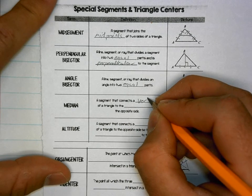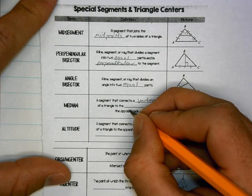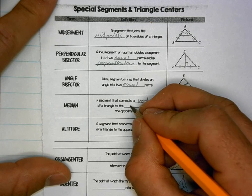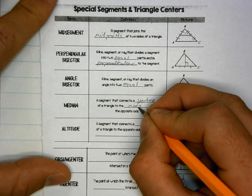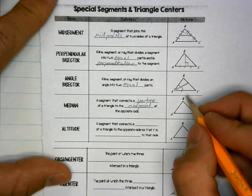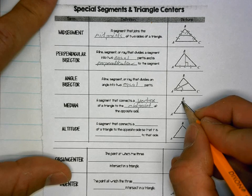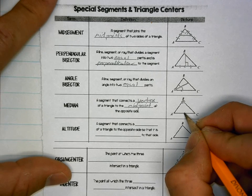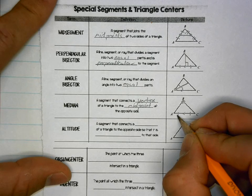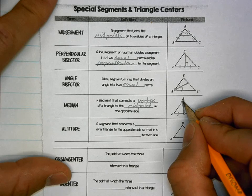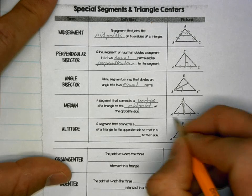Median: a segment that connects a vertex of a triangle to the midpoint of the opposite side. Starting with vertex B, I'm going to draw a line to the midpoint of AC — let's say the midpoint is there, two equal parts, two equal parts. So that is a median: vertex to the middle of the other side.